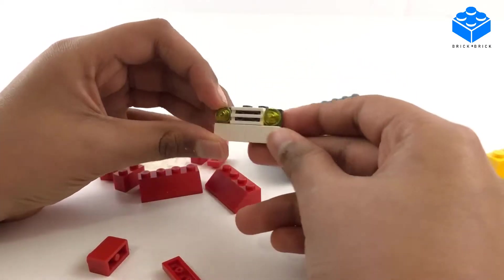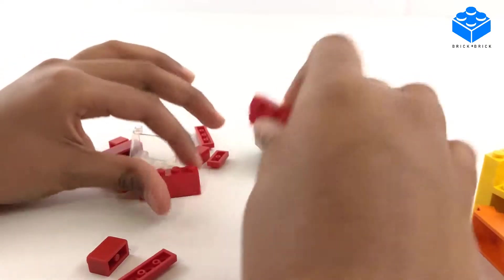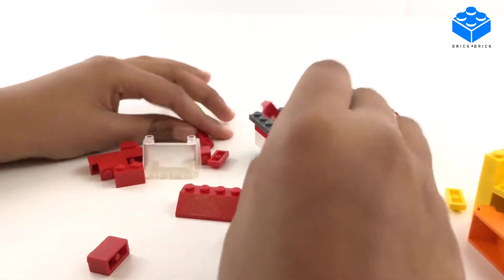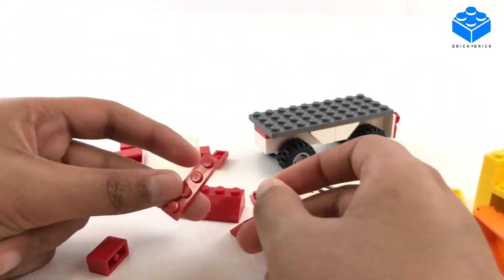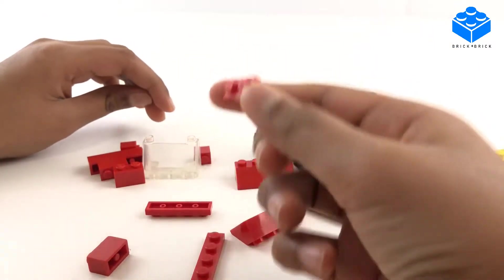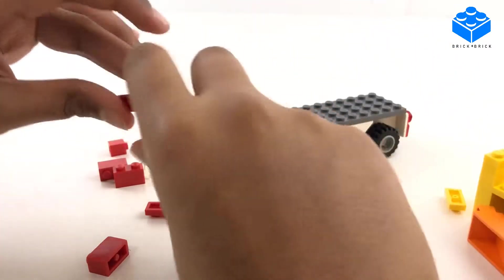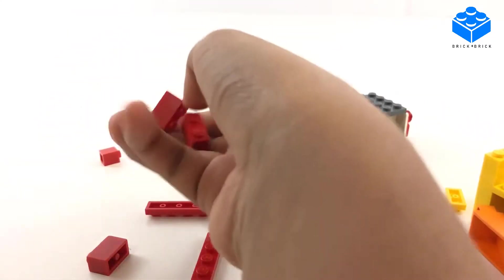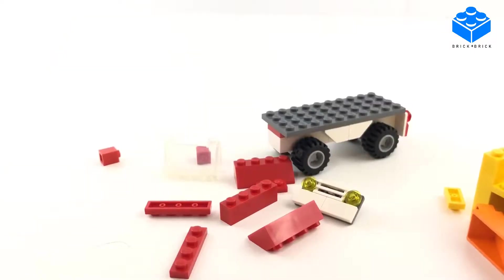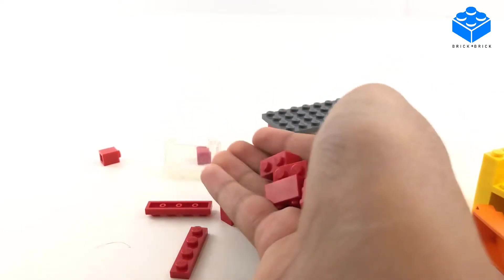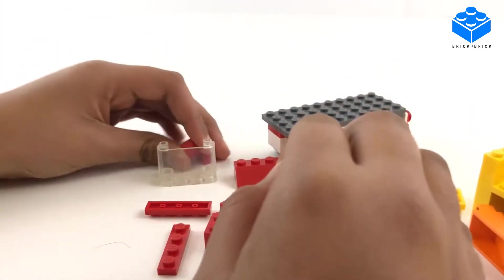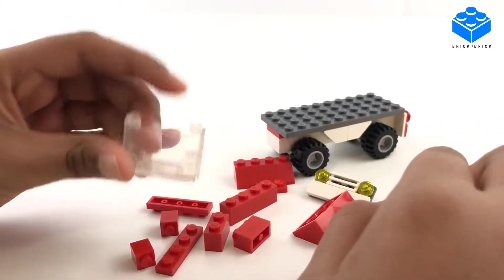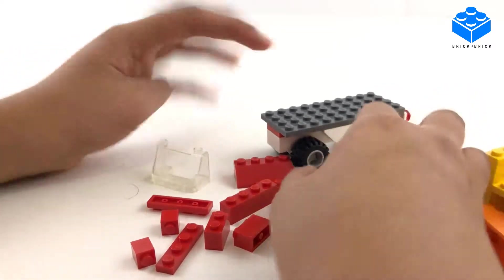Two of these two by four slope pieces, two of these one by four flat pieces, one one by two flat piece, one one by four, two one by twos, actually four one by twos, and two one by ones right here, and one windshield.